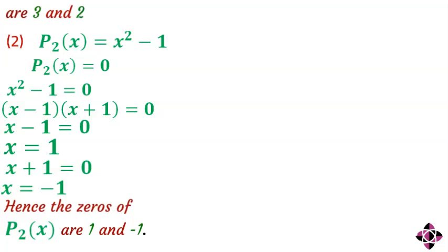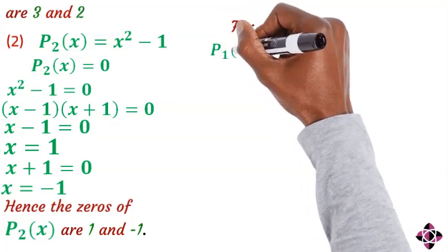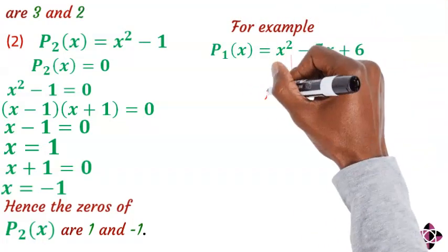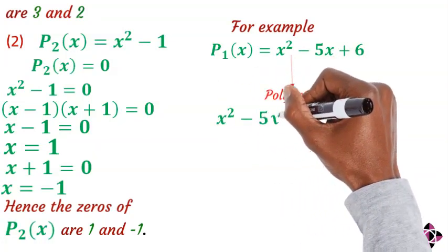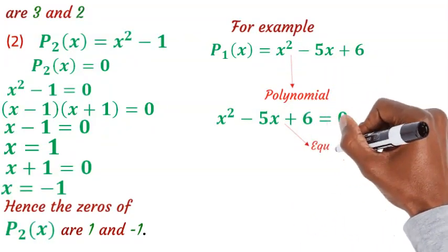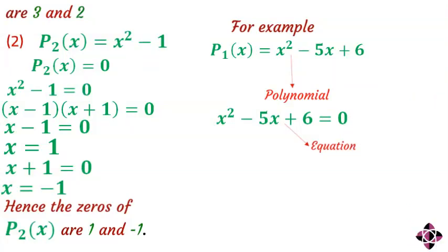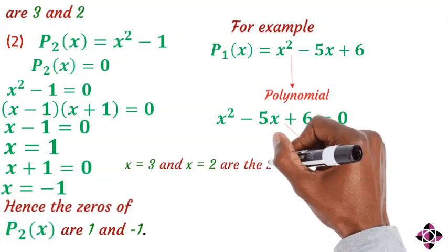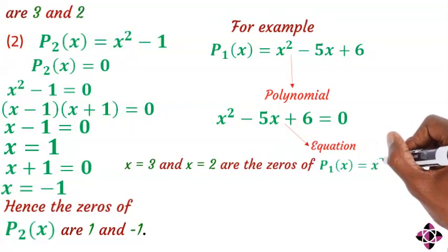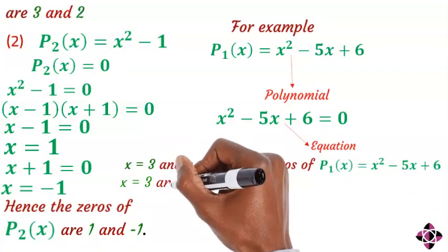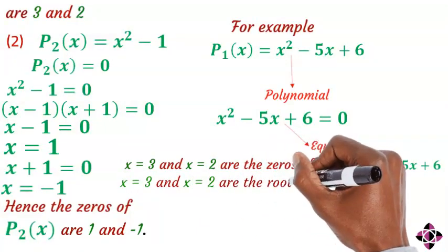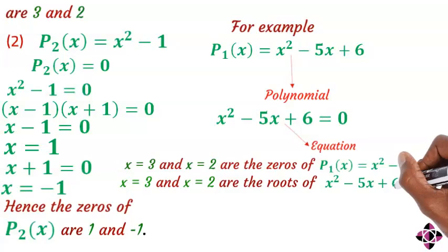It is important to emphasize that a polynomial is different from an equation. For example, p of x equals x squared minus 5x plus 6 is a polynomial, while x squared minus 5x plus 6 equals zero is an equation — the equation is equated to zero. As seen from the above examples, x equals 3 and x equals 2 are the zeros of p of x equals x squared minus 5x plus 6, while x equals 3 and x equals 2 are the roots of the equation x squared minus 5x plus 6 equals zero.